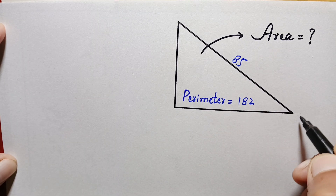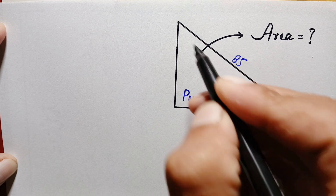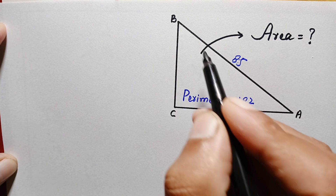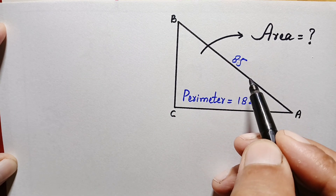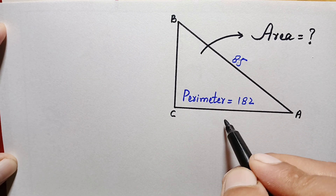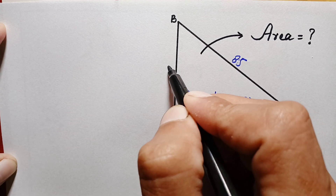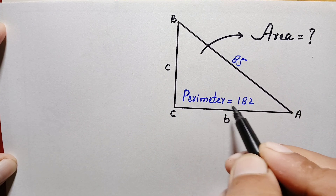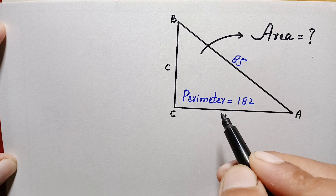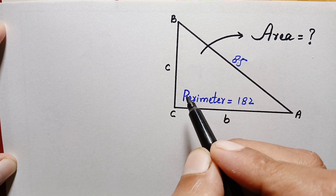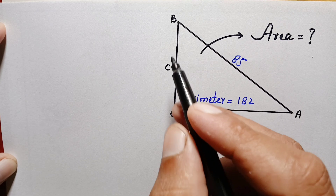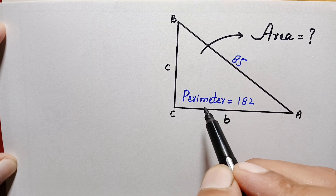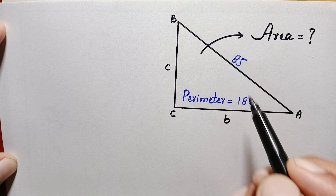First of all, let us suppose this is our triangle ABC — point A, point B, and point C. Let us suppose this side is 'a' and this side is 'b'. In this problem we have given the perimeter of this closed figure. The perimeter of any closed figure is the sum of all its sides and boundaries.